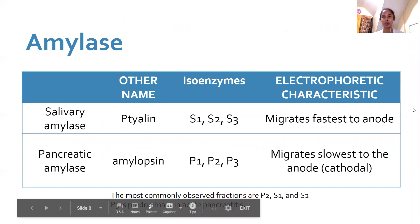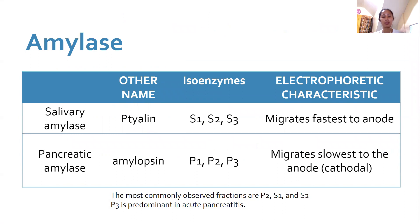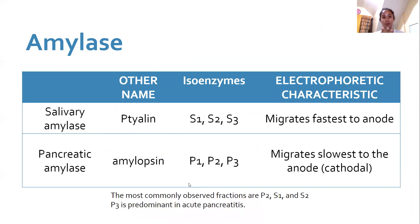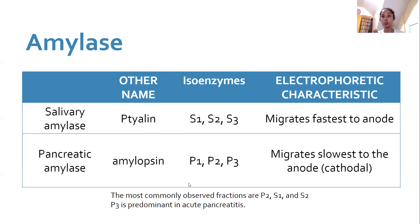For amylase, we have six isoenzymes — two main types. Salivary amylase (also called tyeline) has isoenzymes S1, S2, and S3; tyeline migrates fastest toward the anode. Pancreatic amylase (also called amylopsin) has isoenzymes P1, P2, and P3; amylopsin migrates slowest toward the anode, near the cathode. The most commonly observed fractions in circulation are P2, S1, and S2.